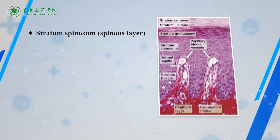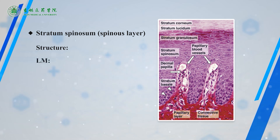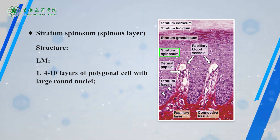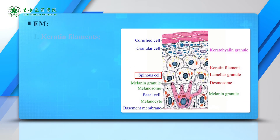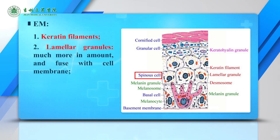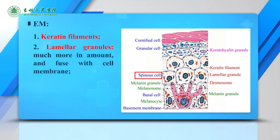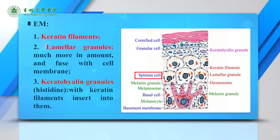The second layer is the stratum spinosum, also named the spinous layer. By LM, it contains four to ten layers of polygonal cells with large round nuclei and spinous processes with basophilic cytoplasm. By EM, keratin filaments are arranged in a radial pattern. Lamellar granules are new components in the cytoplasm, containing glycolipid and steroid, and they discharge their contents into the intercellular space to form sheets which act as a barrier to penetration by foreign materials, providing a very important sealing effect in the skin. The membrane is thicker because of involucrin located on the inner side of the membrane.